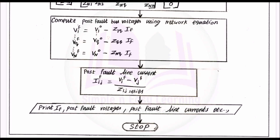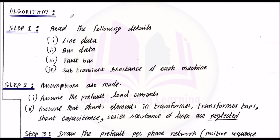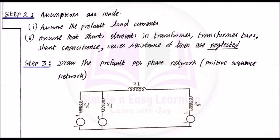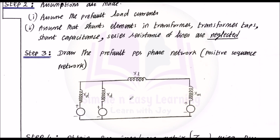This completes the flowchart for fault analysis using the Z bus matrix. Now for the algorithm: Step 1 — read the line data, bus data, fault bus, and sub-transient reactance of each machine connected to the system. Step 2 — assume pre-fault load currents, shunt elements in transformers, transformer tap settings, shunt capacitance, and series resistance of lines are neglected.